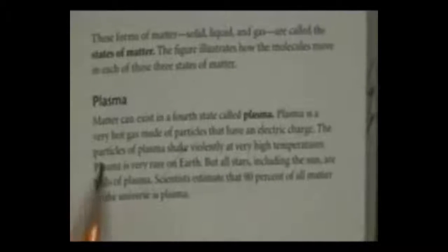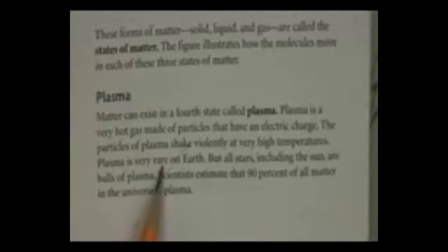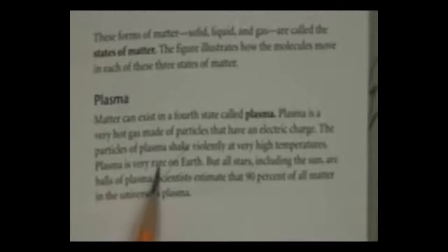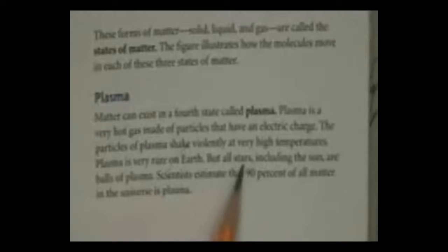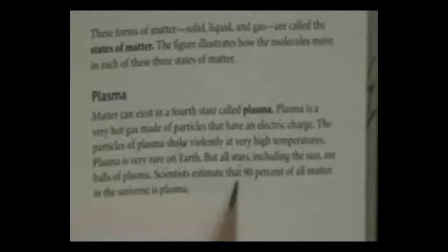Let's talk about plasma. Matter can exist in a fourth state called plasma. Plasma is a very hot gas made of particles that have an electric charge. The particles of plasma shake violently at very high temperatures when it's very hot. Plasma is very rare on Earth. That means we don't see it very often in natural settings on Earth. But all stars, including our star, the sun, are balls of plasma. Scientists believe, or scientists estimate, that 90% of all matter in the universe is plasma.